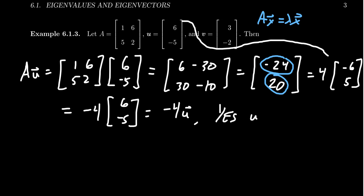So the answer to the question is yes. Yes, U is an eigenvector. It's an eigenvector, and we also know its eigenvalue. Its eigenvalue is equal to -4.